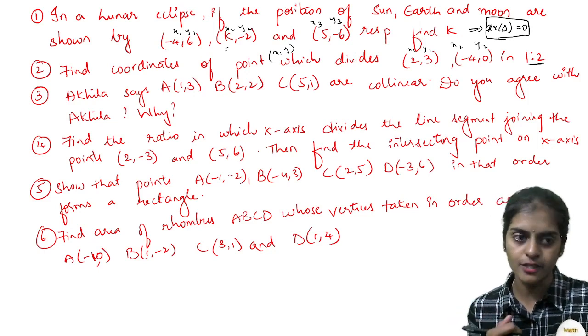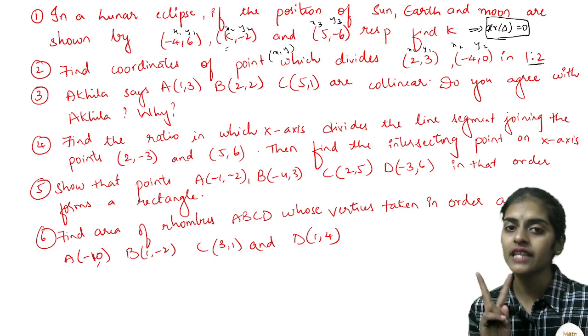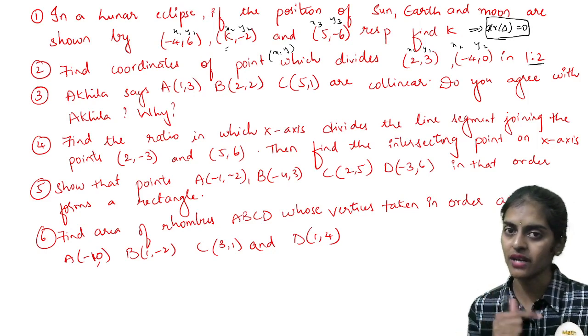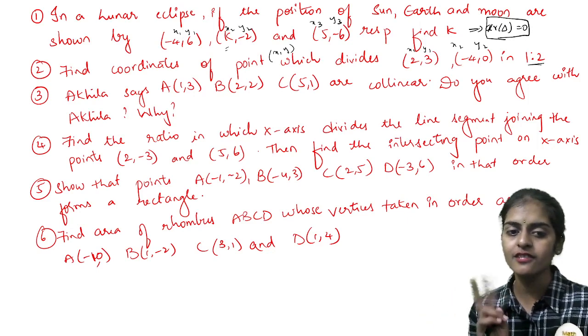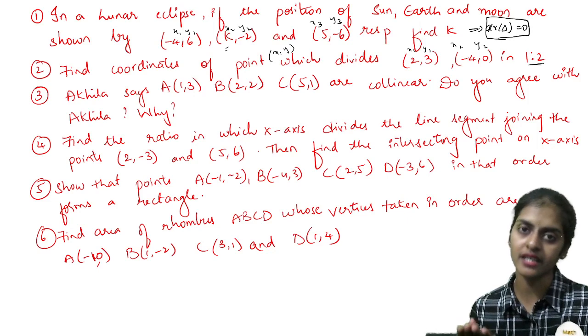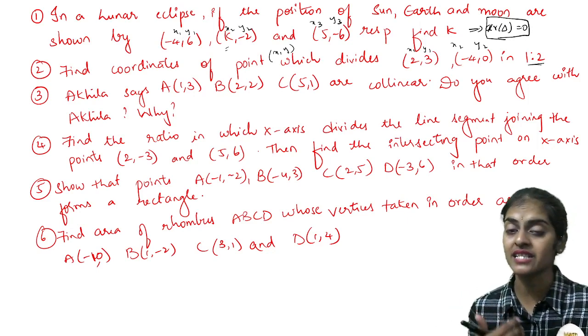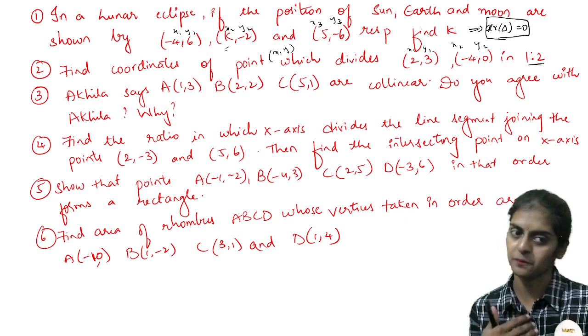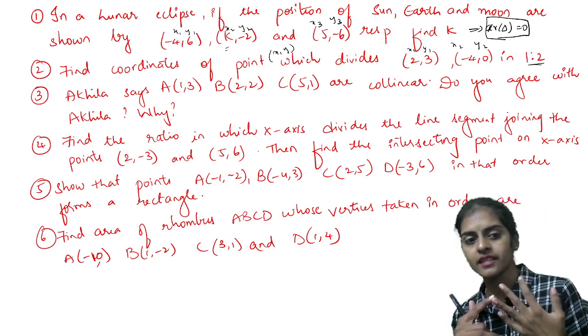In question number 2, you see 1 is to 2 is point of trisection also, dividing it in 3 parts. If the same question, if they ask you find the points of trisection of (2,3) and (-4,0), then you will take two ratios. One ratio is 1 is to 2, 3 parts, 1 plus 2. Second is you can write it as 2 plus 1 also. So 2 is to 1 ratio also. So two points of trisection you will get. So that is also covered, trisection is covered and collinearity concept is covered.